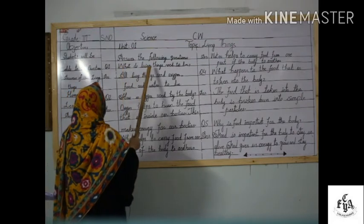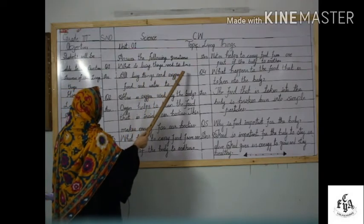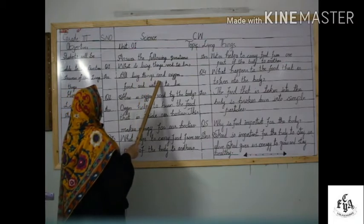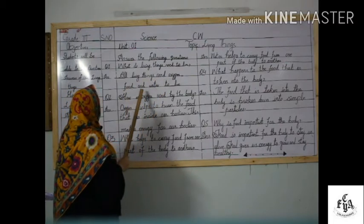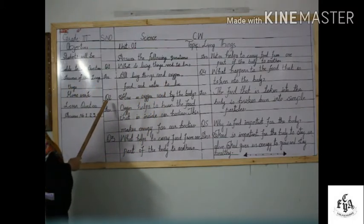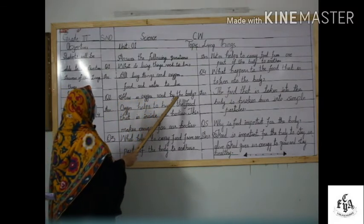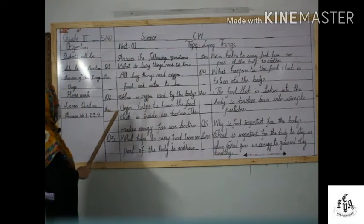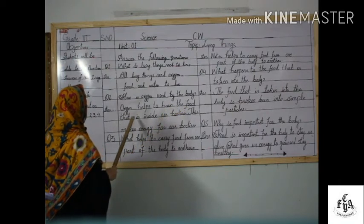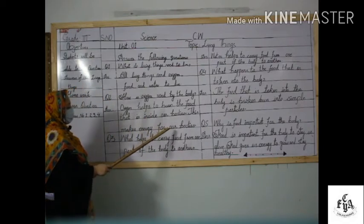Answer the following questions. Question number one: what do living things need to live? Answer: all living things need oxygen, food, and water to live. Question number two: how is oxygen used by the body? Answer: oxygen helps to burn the food that is inside our body, and this makes energy for our bodies.